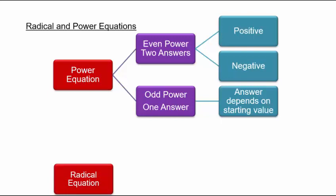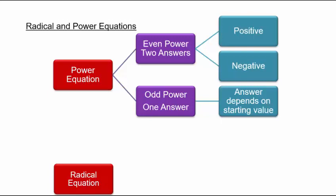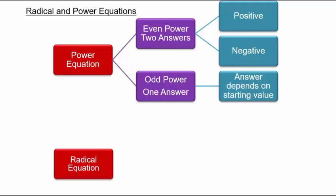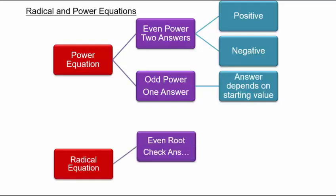Now let's talk about radical equations — linear expressions raised to fractional powers where the numerator is 1: half power, one-third power, one-fourth power — in other words, square roots, cube roots, fourth roots, fifth roots. You have linear expressions under the radical sign equaling a number. If you have an even root, like square root of x equals 4, you square both sides to get the answer. When you square both sides, always check for extraneous solutions, because raising to an even power loses the sign information.